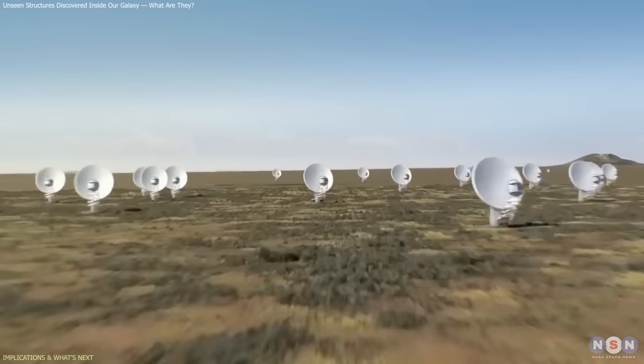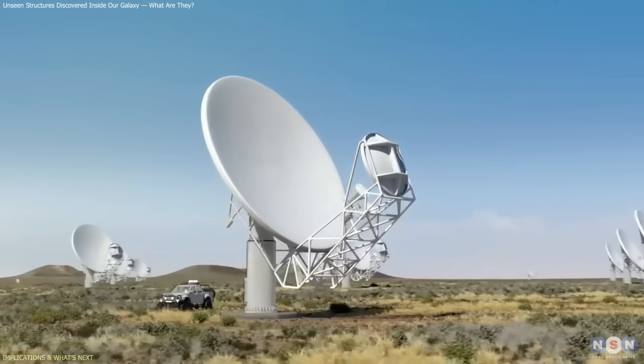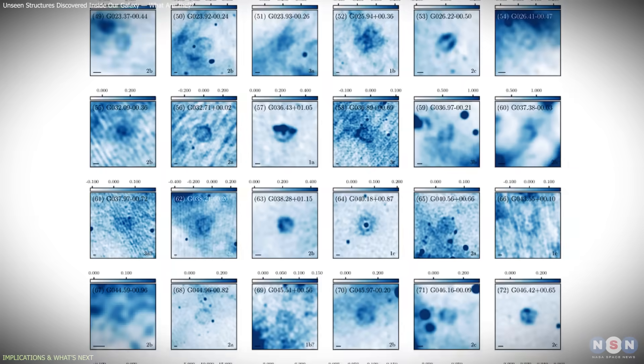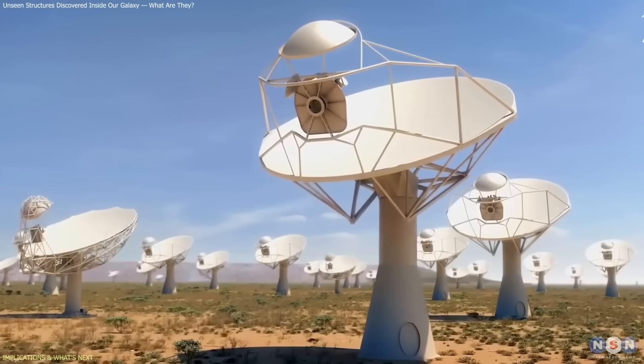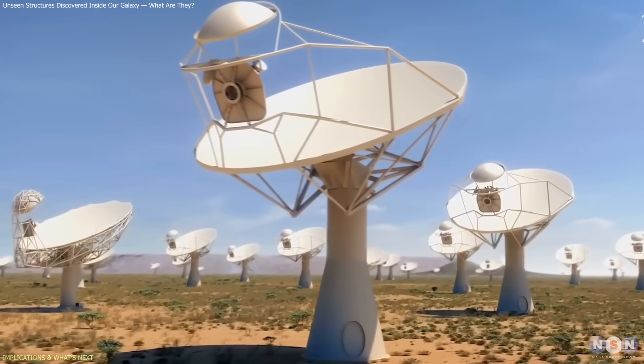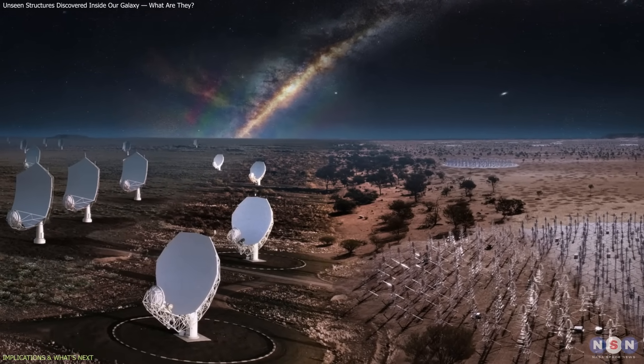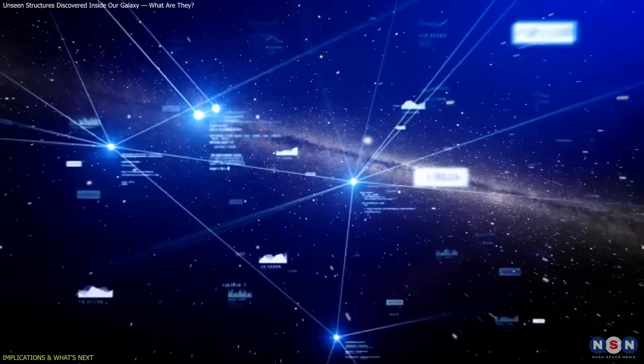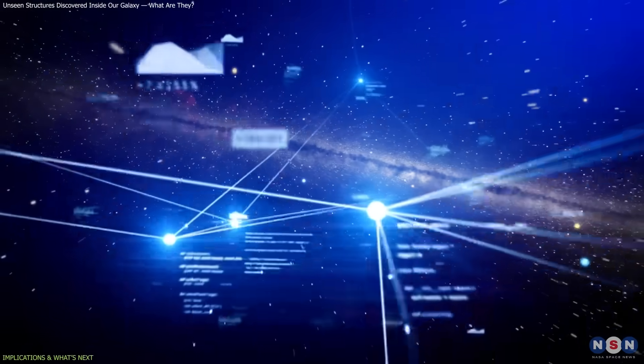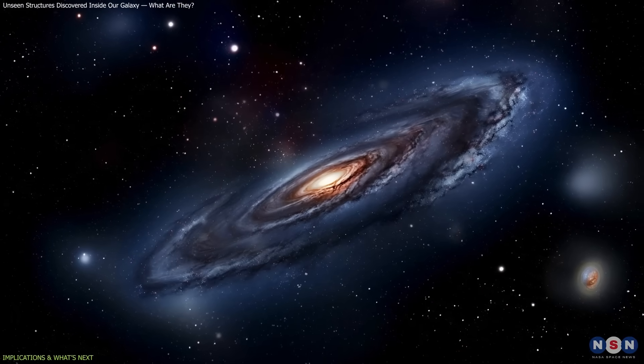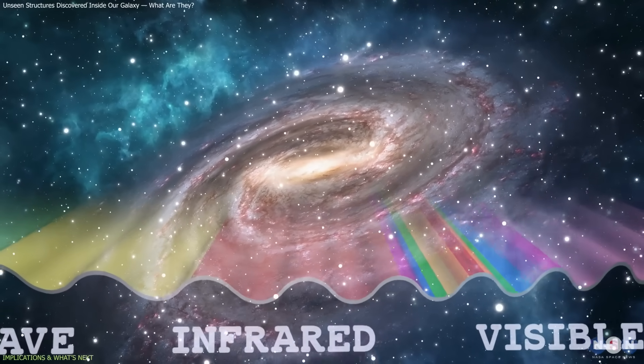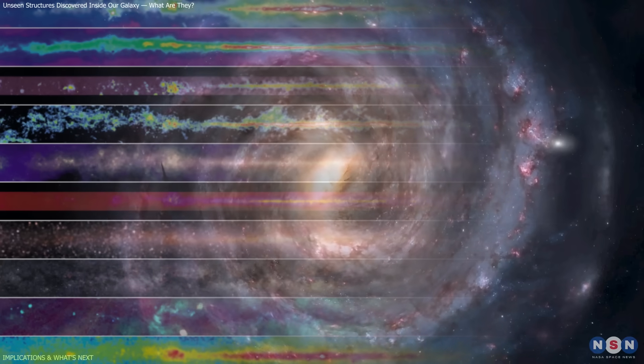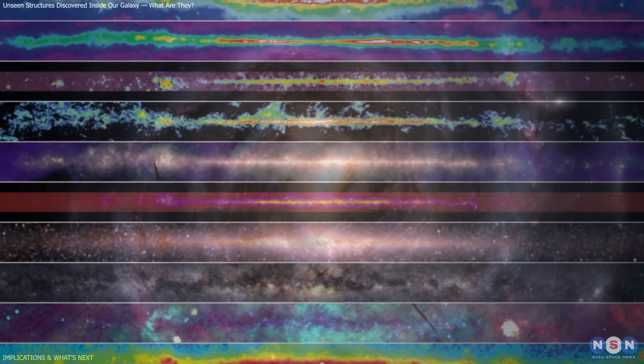Third, this discovery underscores the power of next-generation radio facilities. Meerkat's capabilities allowed astronomers to detect these faint objects. But this is just the beginning. Square Kilometer Array, once operational, will survey the sky with even greater sensitivity and resolution, making it possible to map these structures across the entire galaxy. Future steps will involve multi-wavelength follow-ups to pinpoint central sources or remnants, spectral and polarization studies to determine whether the emission is thermal or non-thermal and to probe magnetic fields.